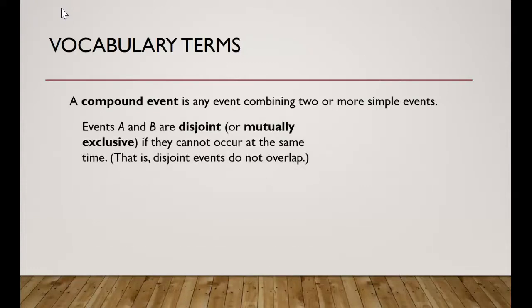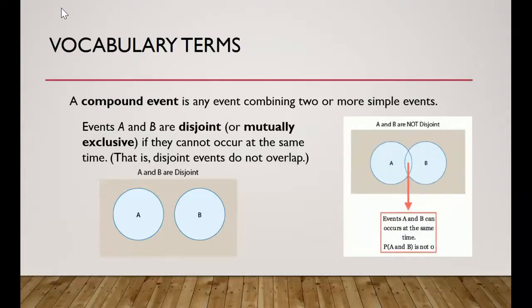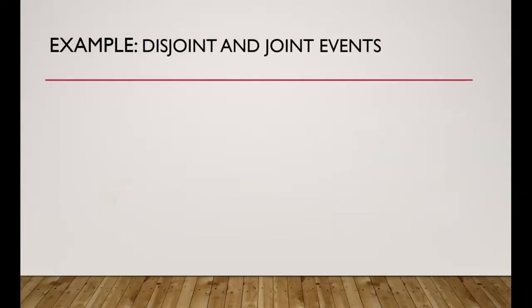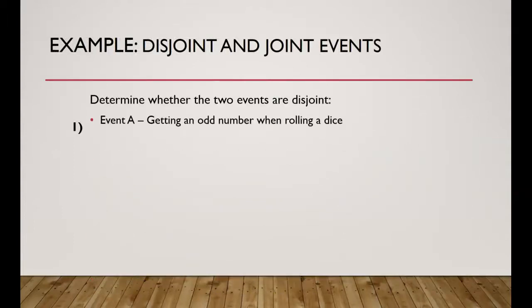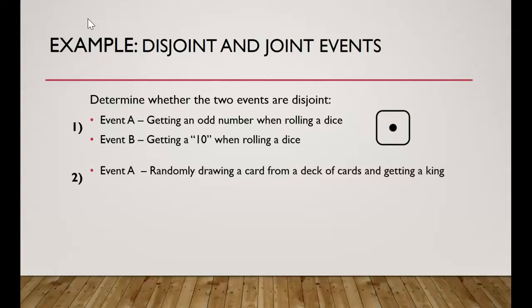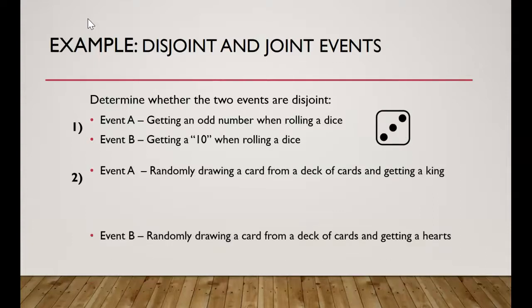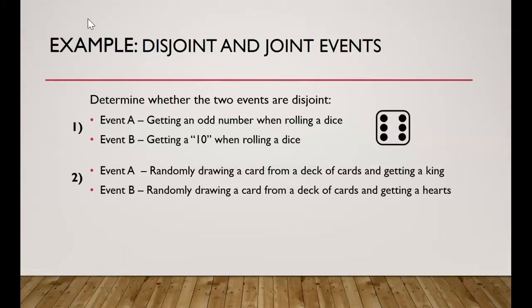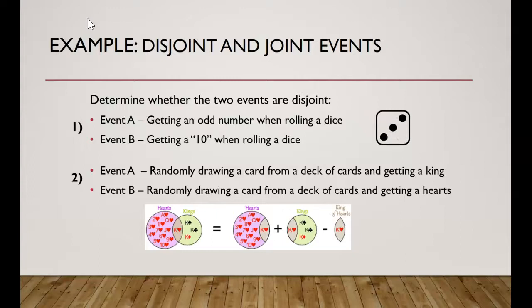Events are considered disjoint, also called mutually exclusive, if they can never occur at the same time. Events are not disjoint if they can occur at the same time and have some overlap. For example, getting an odd number when rolling a die and getting a 10 when rolling a die is disjoint because a die has only six numbers and getting 10 is impossible. Drawing a card that is both a king and a heart is not disjoint, since a king of hearts exists.